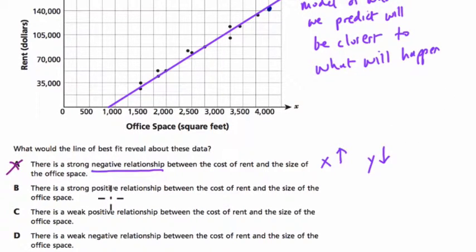B, there is a strong positive relationship between the cost of rent and the size of office space. So they're mentioning rent first and office space second. The strong positive relationship, as X goes up, Y goes up. And this is true. Y is the cost of rent.